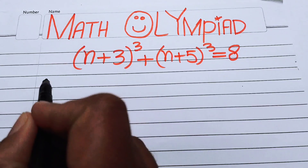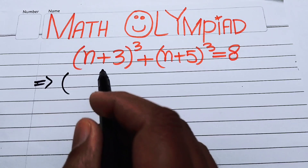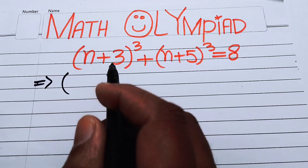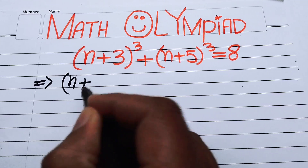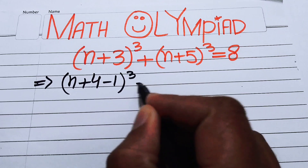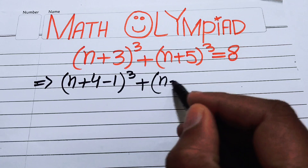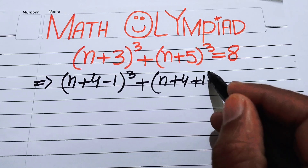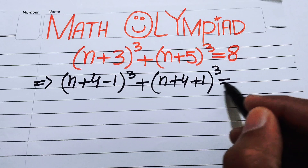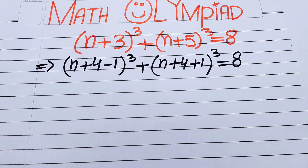The very first thing we are going to do is rewrite this equation. We write (n+3) as (n+4−1) cubed, and we write (n+5) as (n+4+1) cubed, so the equation becomes (n+4−1)³ + (n+4+1)³ = 8.